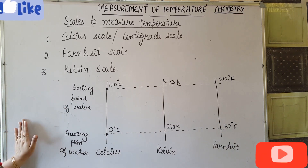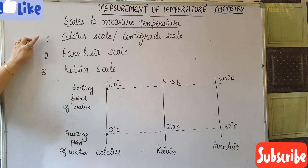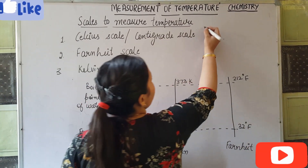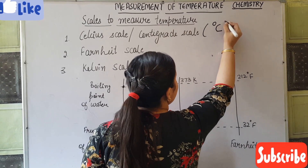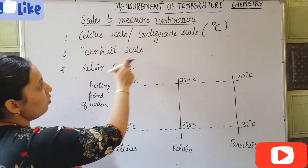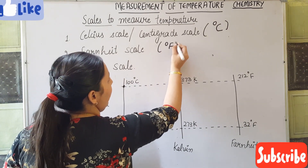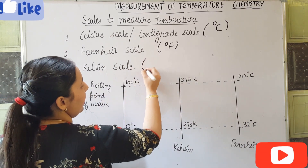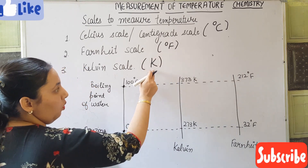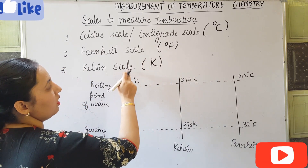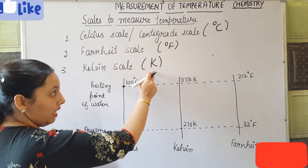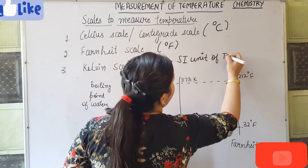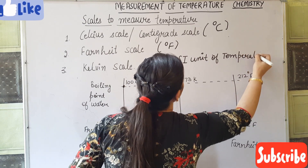We have different scales to measure temperature. The very common scales are the Celsius scale, also known as the centigrade scale, denoted as degree Celsius; the Fahrenheit scale, denoted as degree Fahrenheit; and the Kelvin scale, denoted simply as K — no degree symbol is used. Kelvin is considered the SI unit of temperature.